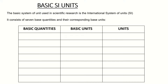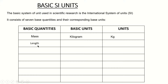Before I continue, note that basic units are independent of other units — they are the foundation from which all other quantities can be formed. Some examples of basic quantities: first, mass. The unit for mass is kilogram, which is a basic unit, and its symbol is kg. The next is length — the unit for length is meters and the symbol is m.